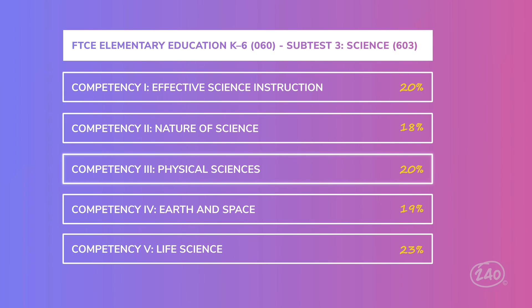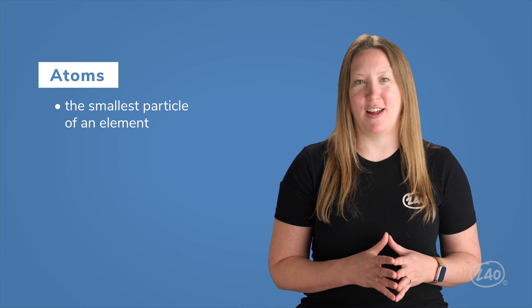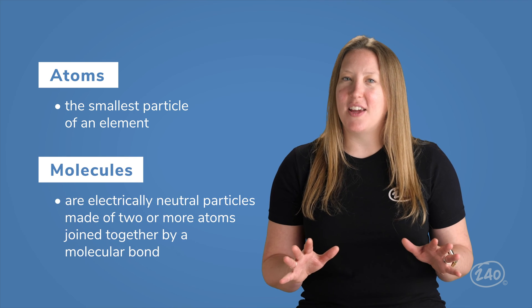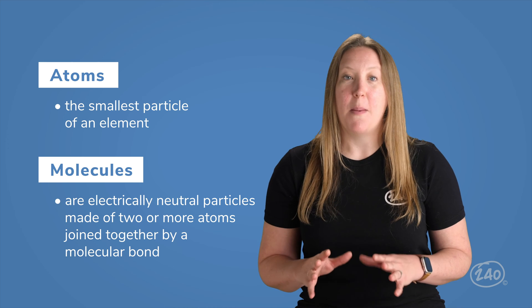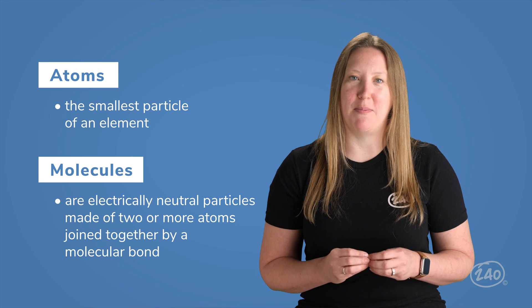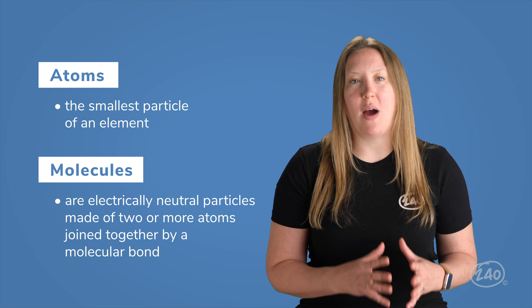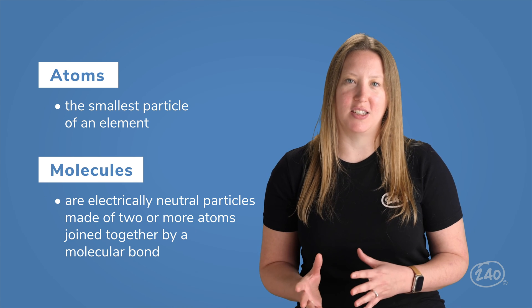Let's move on to Competency 3, Physical Sciences. Here you'll be tested on the physical properties of matter, forms and transformations of energy, homogeneous and heterogeneous mixtures, and more. One important distinction here is atoms versus molecules. Atoms are the smallest particle of an element — each type of atom is also known as an element. Molecules, on the other hand, are electrically neutral particles made of two or more atoms joined together by a molecular bond. For example, water, or H2O, is a molecule — two hydrogen atoms form a molecular bond with an oxygen atom.